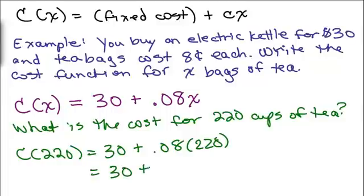C(220) is 30 plus 0.08 times 220, and then we just do that calculation. 30 plus 0.08 times 220, which I think was 17.60. But remember we're talking about money, so we would write $47.60.